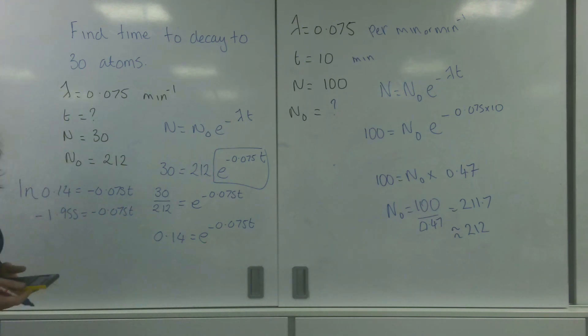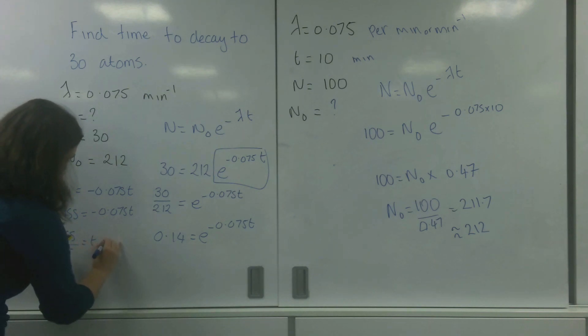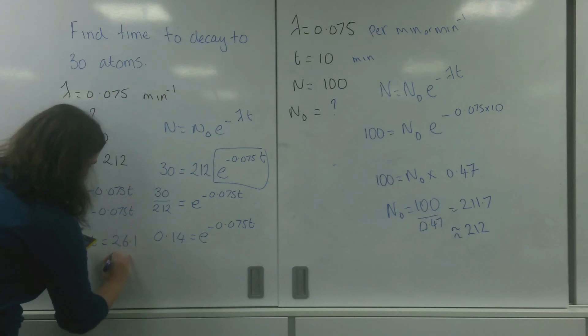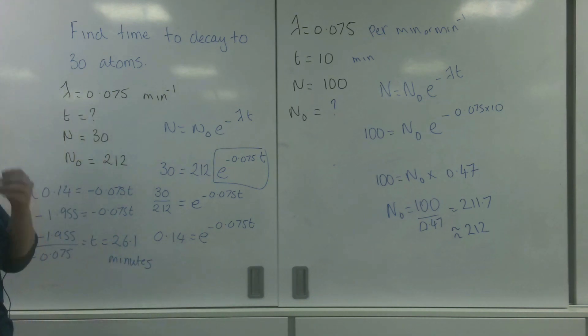And then you can just solve for t as normal. So divided by minus 0.075, and my time equals 26.1 minutes.